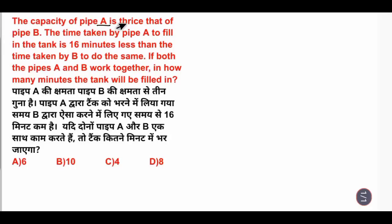The capacity of pipe A is thrice that of pipe B. The time taken by pipe A to fill the tank is 16 minutes less than the time taken by B to do the same. If both pipe A and B work together, in how many minutes the tank will be filled?